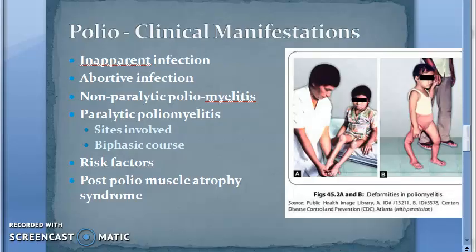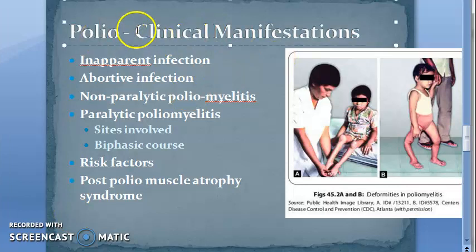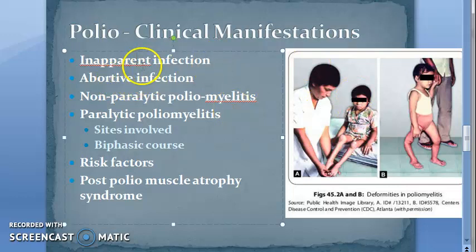Hello people. In this video we wanted to look at the clinical manifestations of poliomyelitis. The incubation period is around 7 to 14 days, and it can go from an asymptomatic to a severe paralytic stage.